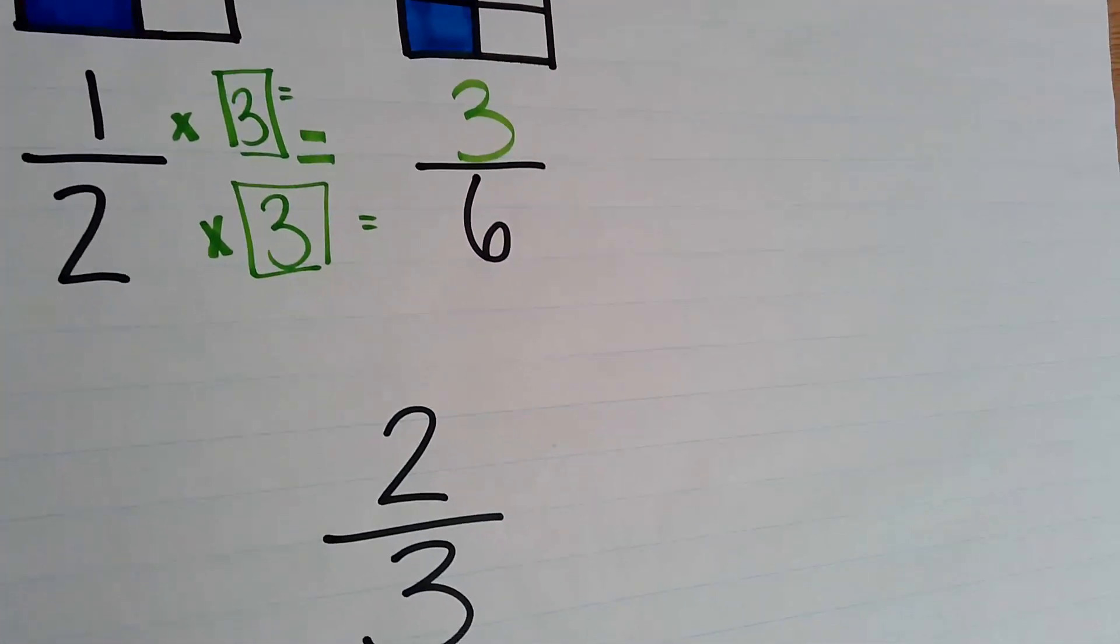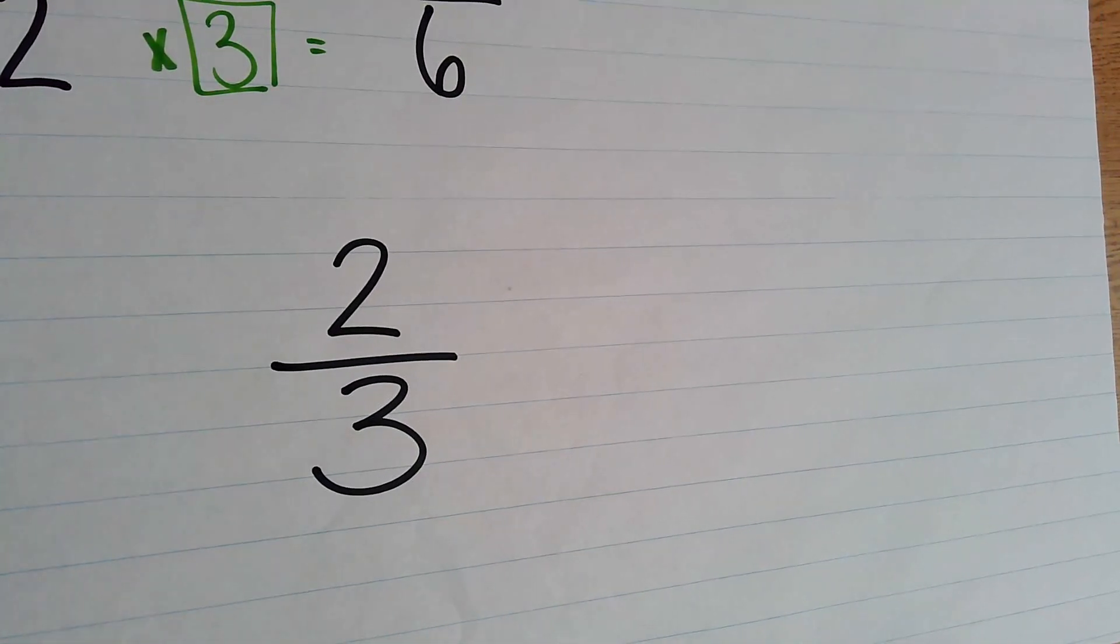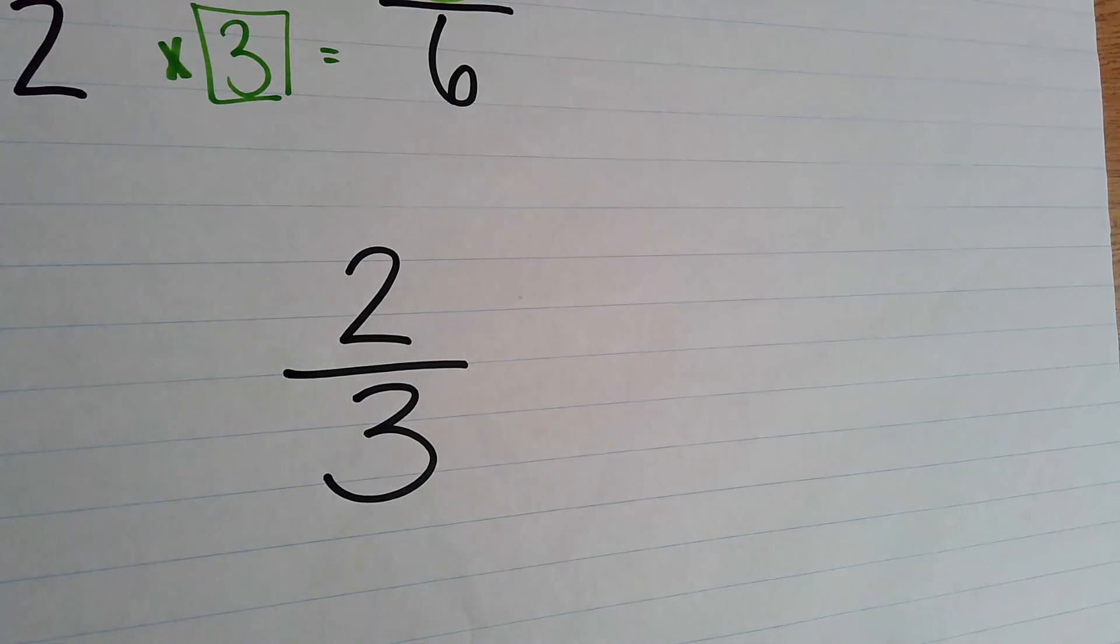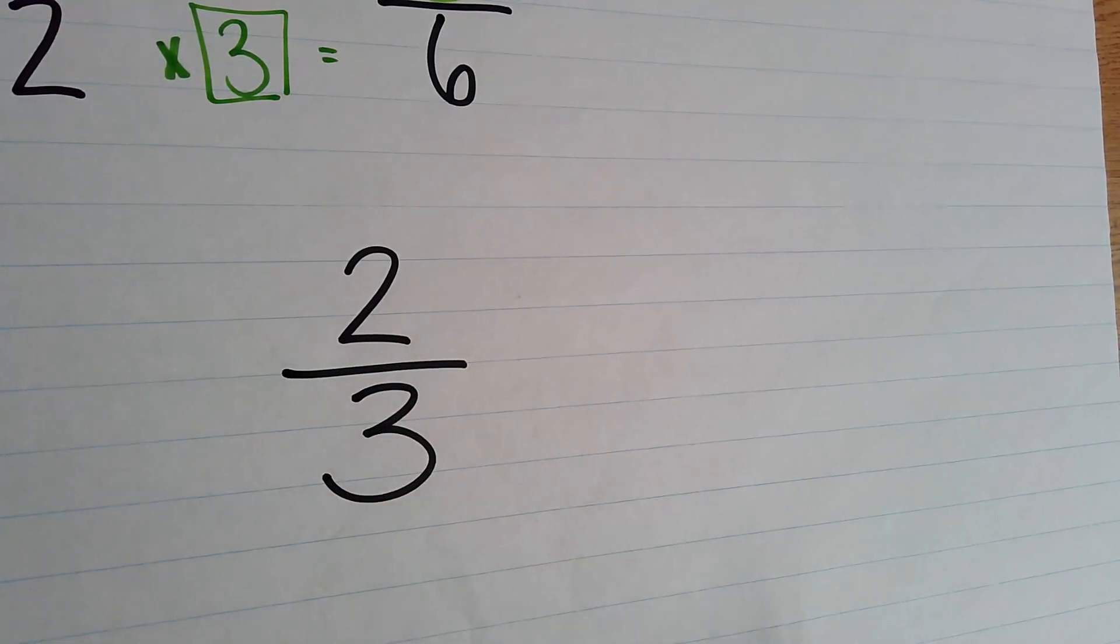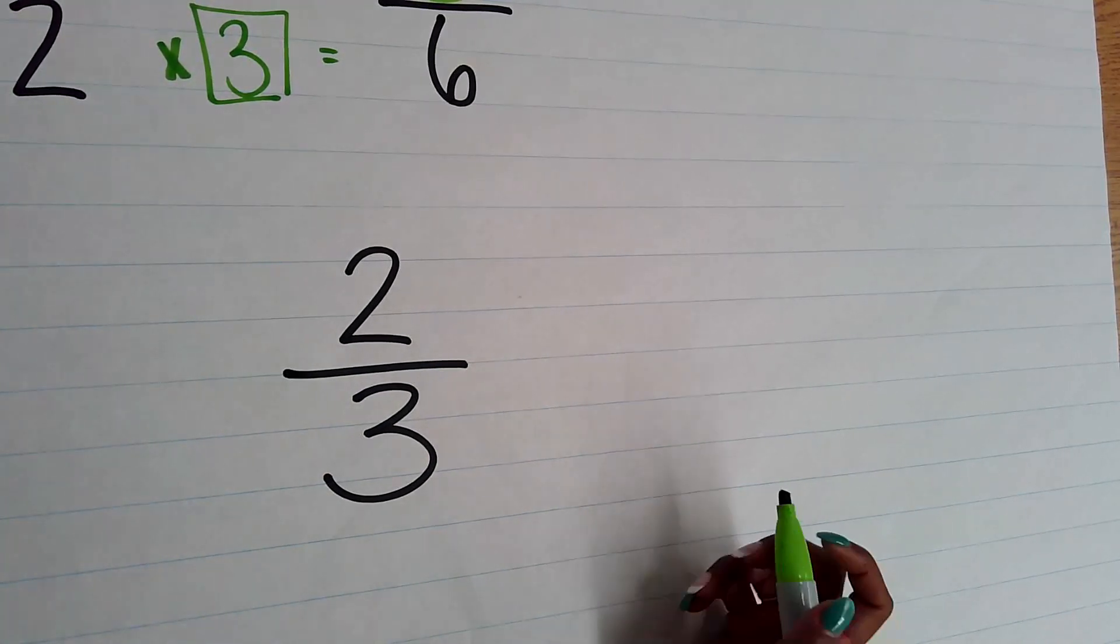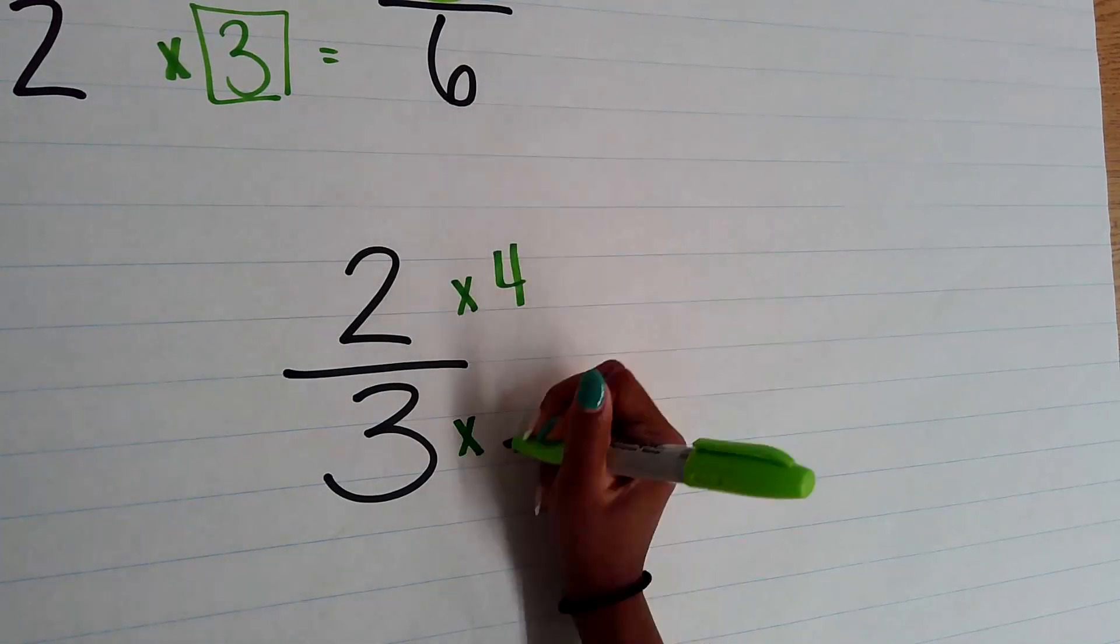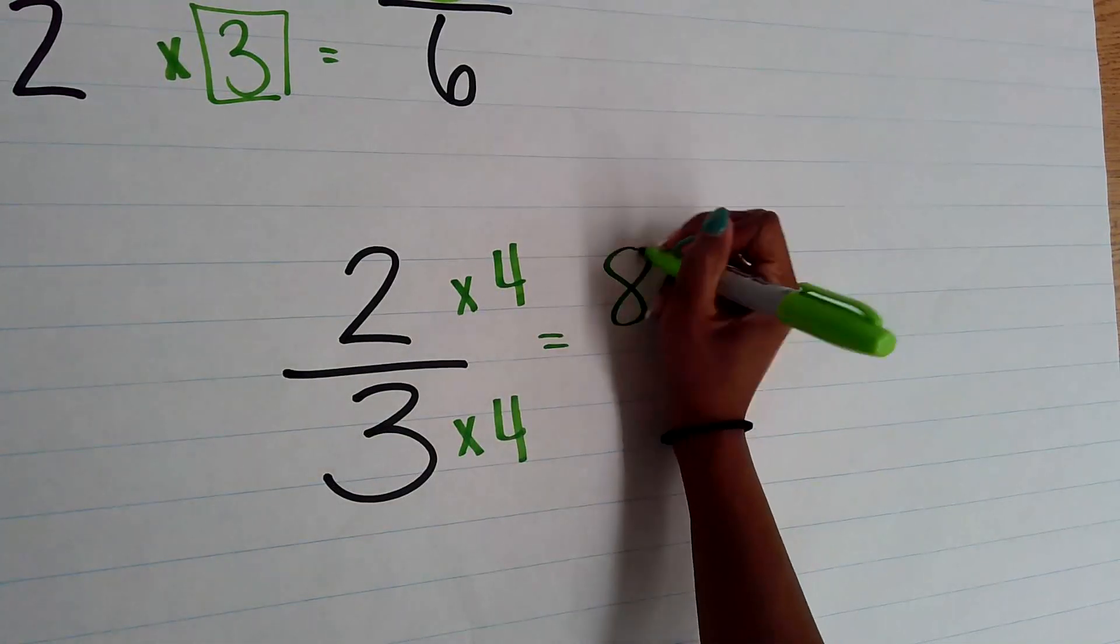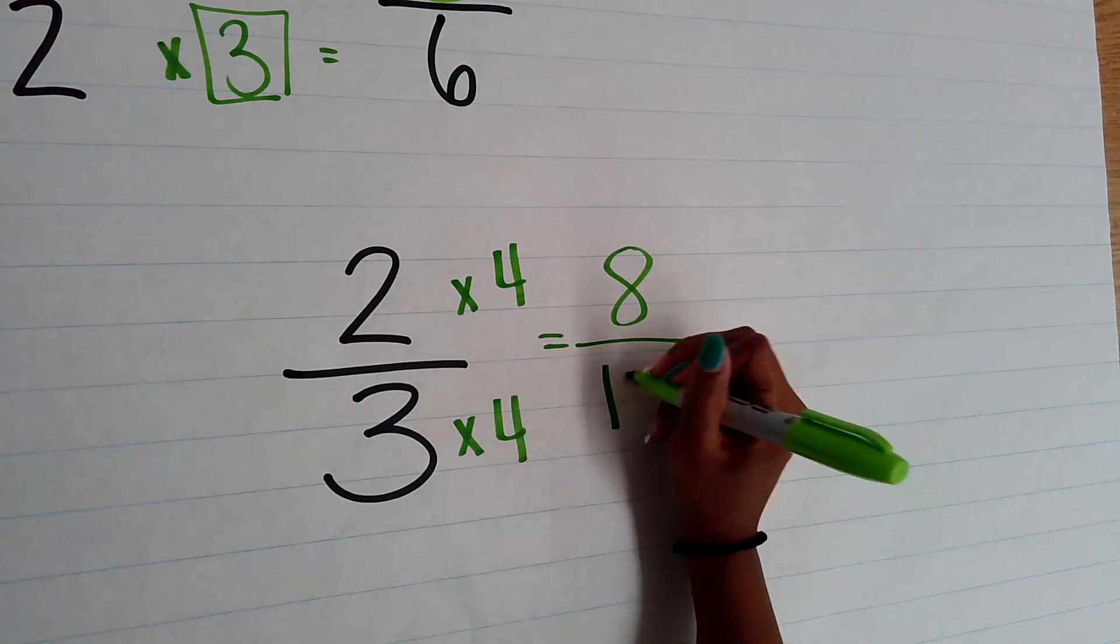That's our focus for fourth grade. So we're going to do one final example without any models. I'm just going to take this two thirds, and I'm going to make an equivalent fraction. As long as I multiply my numerator and denominator by the same number, they are equal in amount. They will take up the same amount of space. So I'm going to go with the number four. Two times four gives me eight, and three times four gives me twelve. And then we're going to go with two.